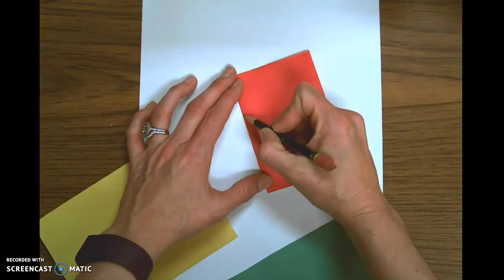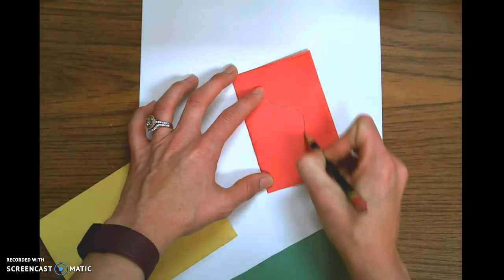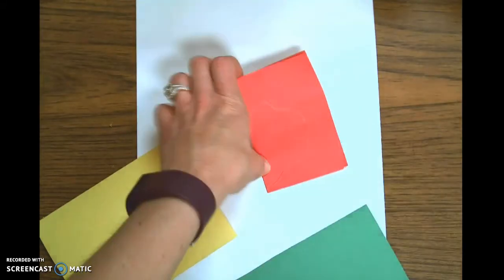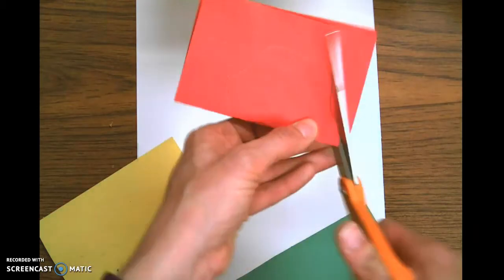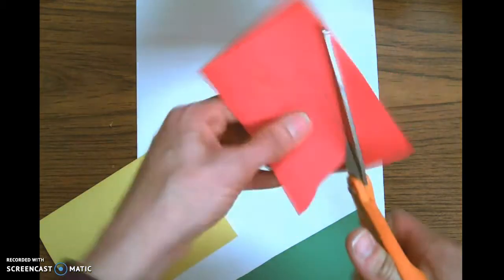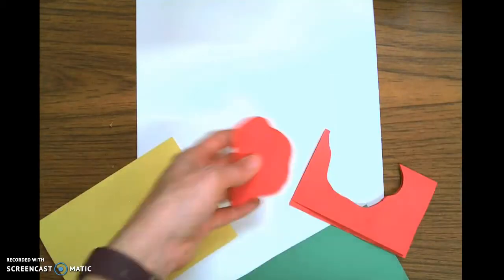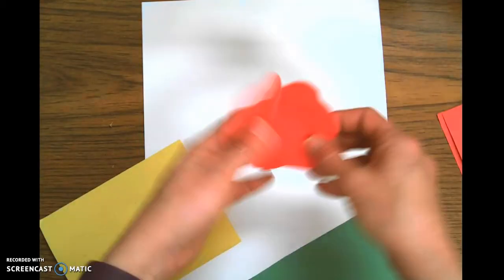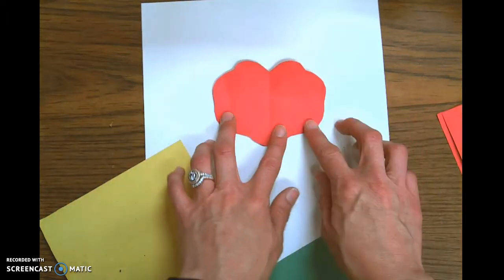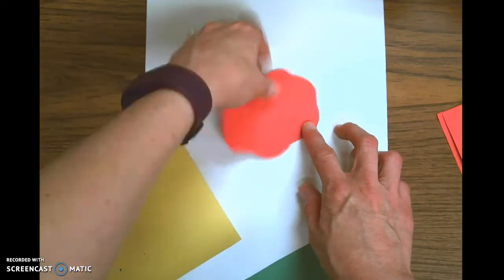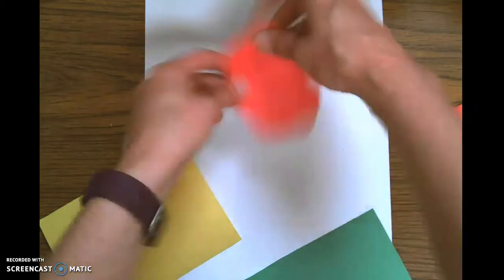So I'm going to draw just kind of a wavy line that comes and curves back around, and then I'm going to cut along that line. And when I open that up, I will have a shape that is now symmetrical on both sides, and I think I might plan to use that for my head.